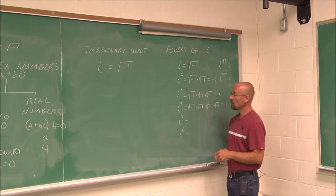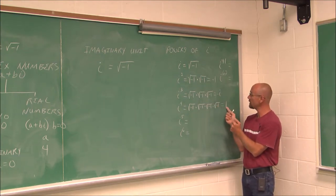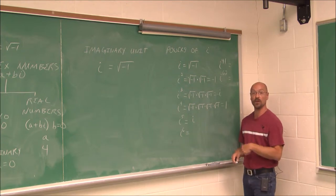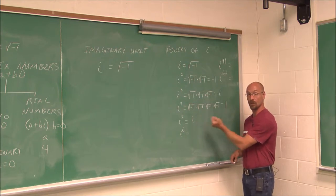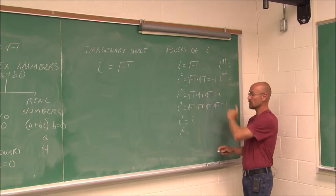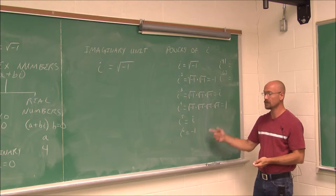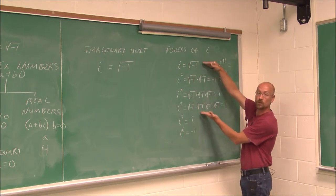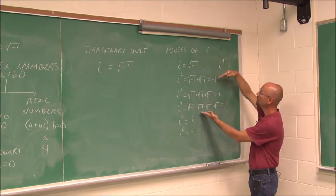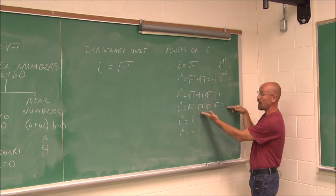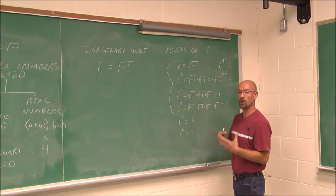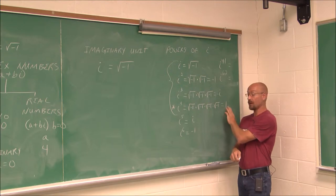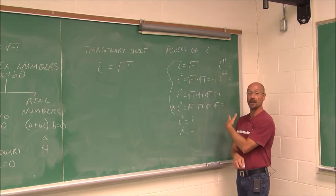i to the fifth is just one more factor than i to the fourth, so 1 times i is just i. i to the sixth is i to the fifth times one more factor of i, giving i squared, which is negative 1. If we continue that, we see this is a repeating pattern. The only four values we'll ever get, no matter what power we raise i to, are i, negative 1, negative i, or positive 1. These are the only four we really need to know. The most important is i to the fourth equals 1, because it's a real positive value we can use to determine i to any power.